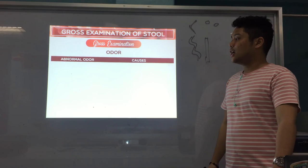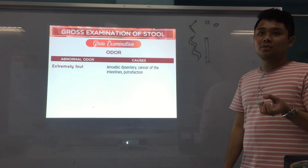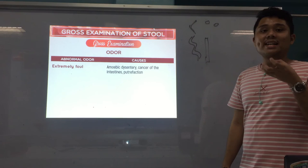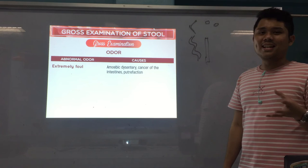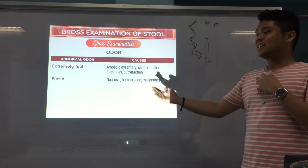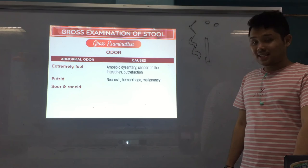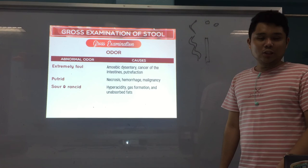For abnormal odors: extremely foul — really, really smelly — could be due to amoebic dysentery, cancer of the intestines, or putrefaction where your tissues are slowly dying. Putrid — could indicate necrosis, hemorrhage, or malignancy — like the smell of something dead. And sour rancid — due to hyperacidity, gas formation, and unabsorbed fats.